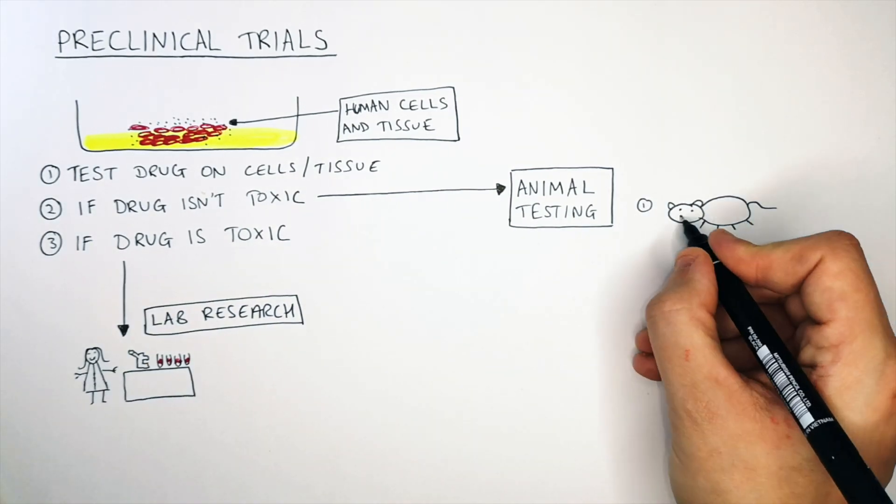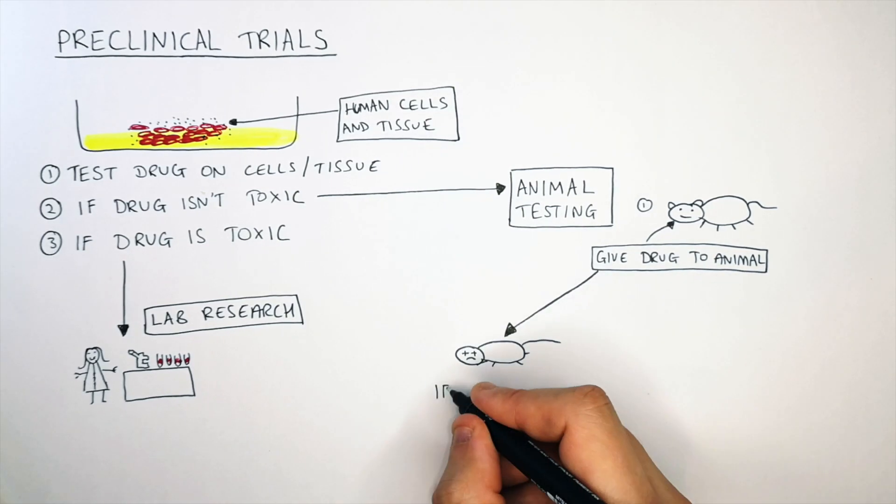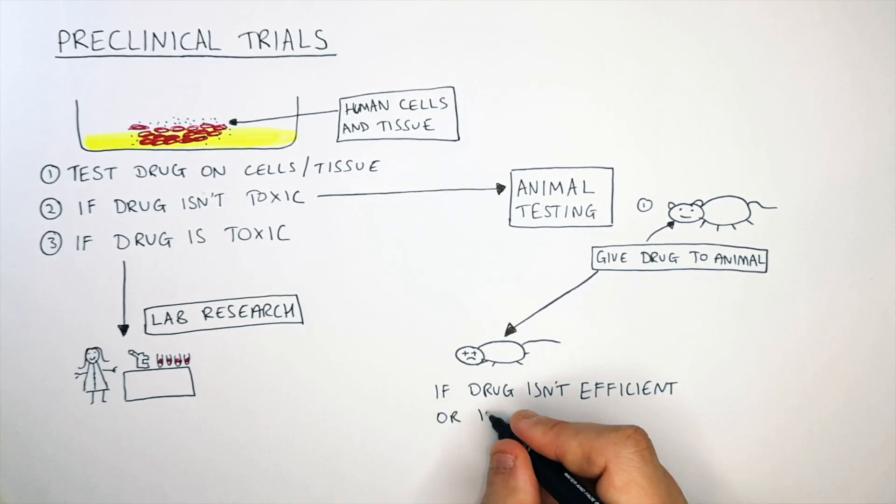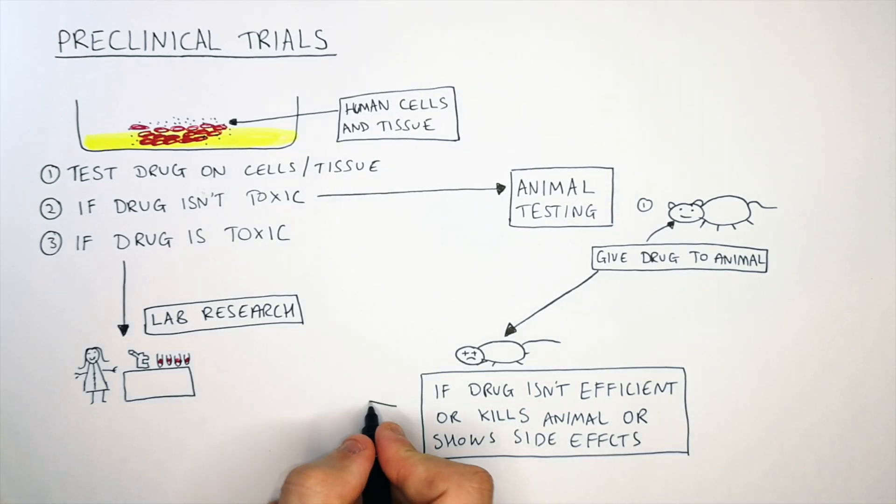So now you do animal testing where you give the drug to the animal to check its toxicity. If the drug isn't efficient or kills the animal or shows side effects that are negative you must then also return back to the lab to do more research on the drug.